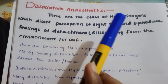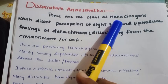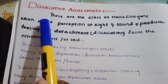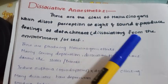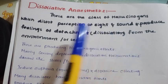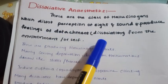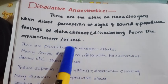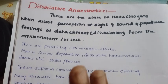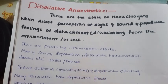These are the class of hallucinogens. We call hallucinogens those which disorder perception of sight and sound and produce a feeling of detachment — that is, dissociation from the environment or self. It means that we feel like it's relaxed.